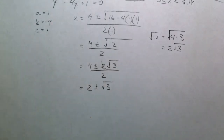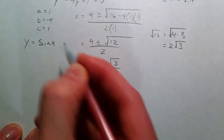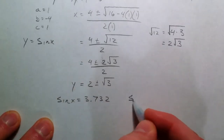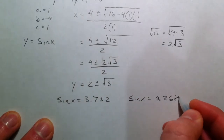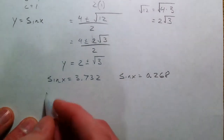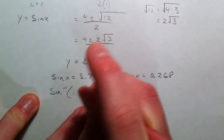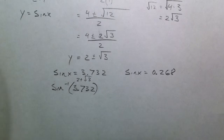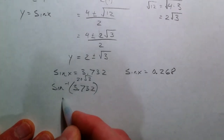So our approximations are: 2 plus √3 ≈ 3.732, and 2 minus √3 ≈ 0.268. Since y equals sine(x), we need sine(x) = 3.732 or sine(x) = 0.268. For inverse sine of 3.732 — the sine value can never equal 3.732, so that's undefined, no solution.